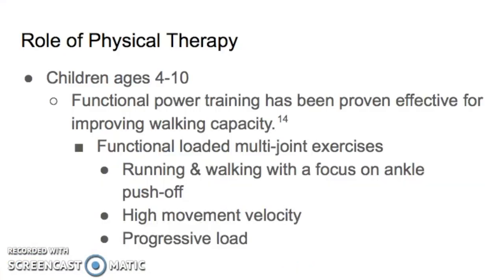In a third study by Van Volpen, they looked at children ages 4 to 10, which is a little outside of the neuroplasticity age. This study looked at functional power training, which can be used to improve the walking capacity in children ages 4 to 10. They used functional loaded multi-joint exercises to mimic activities most relevant to real-life activities, including running and walking with focus on ankle push-off, high movement velocity, and progressive load.